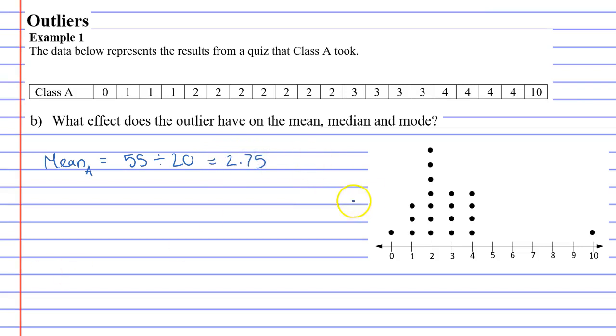Okay, next we'll look at the median for class A. And the median is the middle number. The median would be there, and we can see that it's 2. So median equals 2.